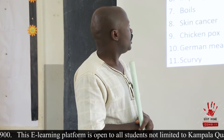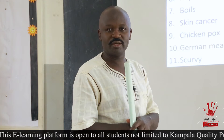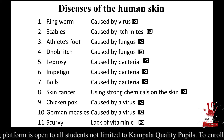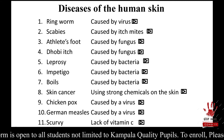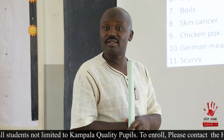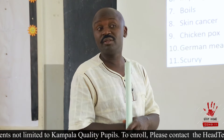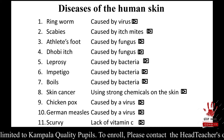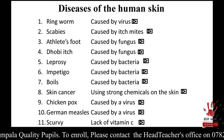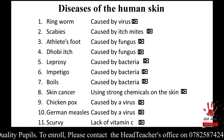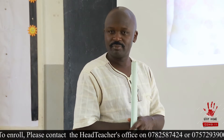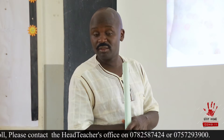We can also have impetigo. Then we can have boils. Then we can have skin cancer. Then we can also have chickenpox. Then we can also have German measles — which we looked at in P5 as one of the immunizable diseases that can affect babies and even adults, and it affects the skin. And we can also have scurvy, which is a deficiency disease caused by lack of vitamin C in the diet, which we covered in P4. By eating fruits we get vitamin C.